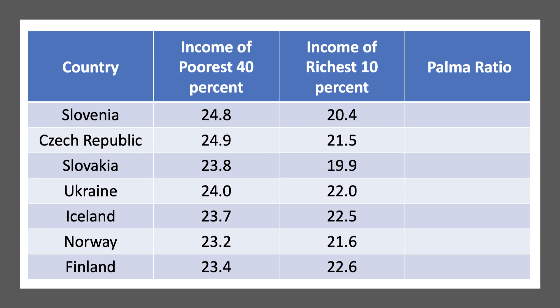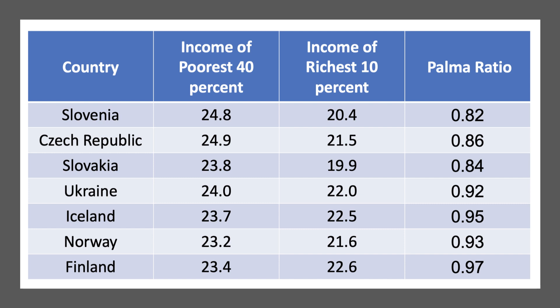Here are some countries which have a significantly more equal income distribution: Slovenia, Czech Republic, Slovakia, Ukraine, Iceland, Norway, and Finland. All of these countries have a Palmer Ratio of less than 1, ranging from 0.82 in Slovenia to 0.97 in Finland. These countries have a very low Gini coefficient as well — good examples of nations with a significantly lower Palmer Ratio, but they're a fairly select bunch.